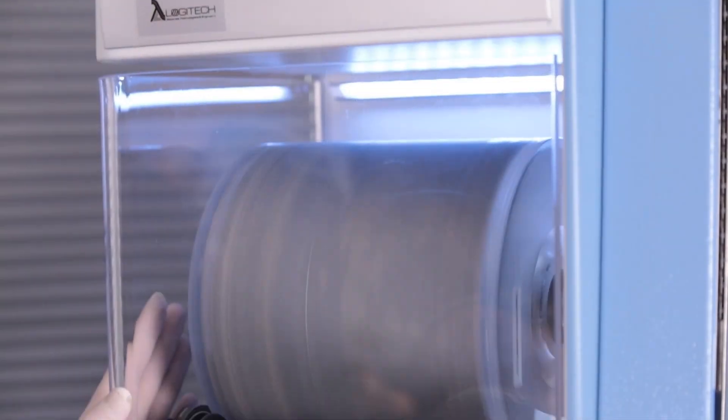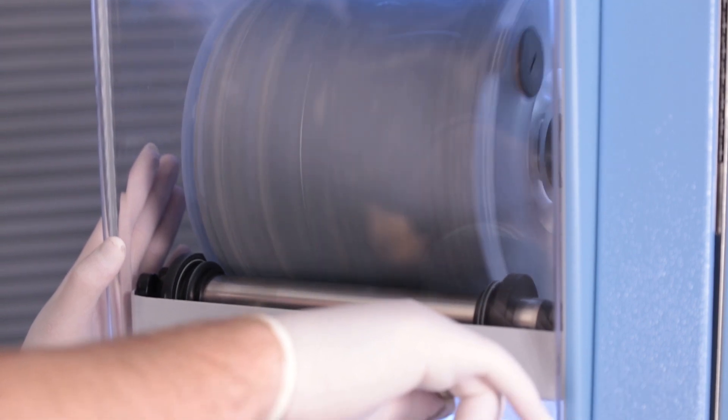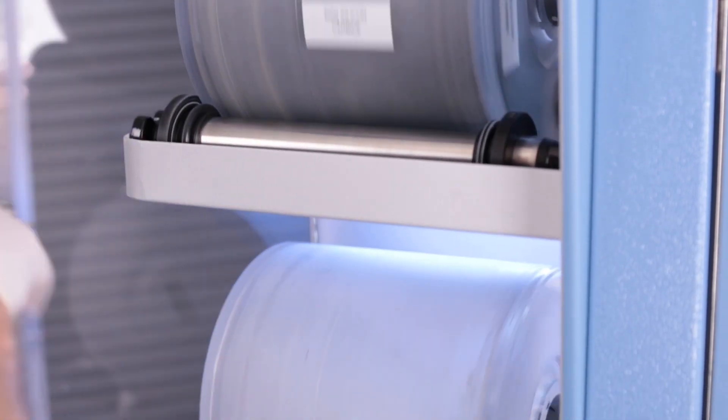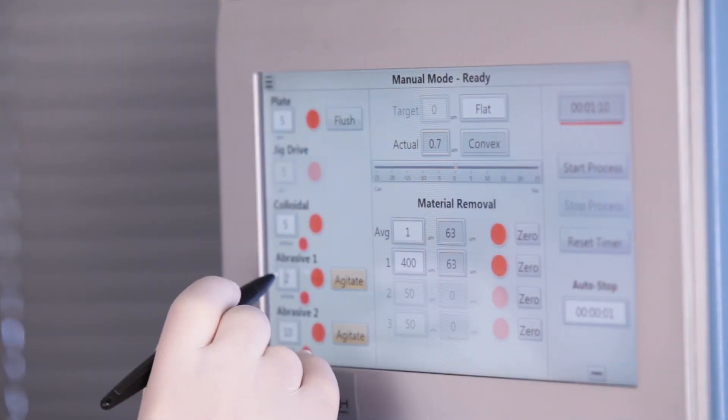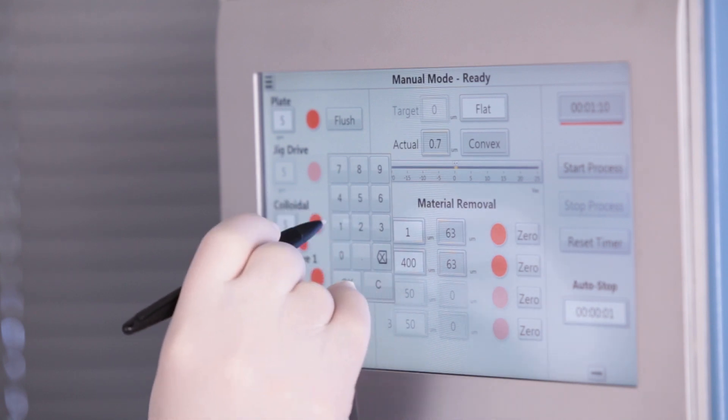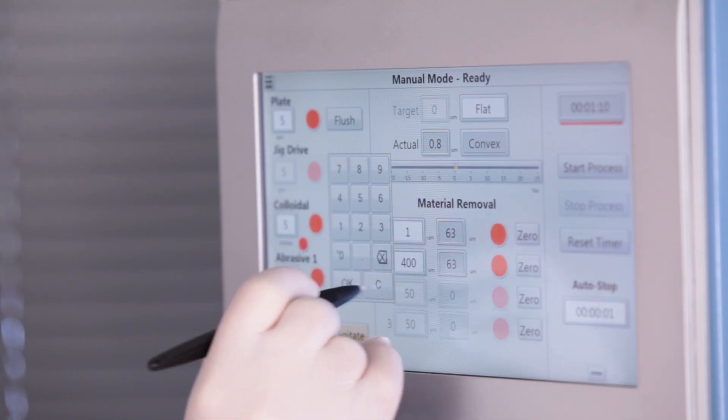You've got twin slurry tanks for extended process of sample and or multi-stage processes. Plus you've got a handy touchscreen, which can enable you to accurately deliver slurry from the peristaltic pumps controlled within.